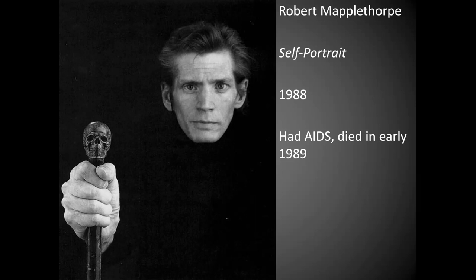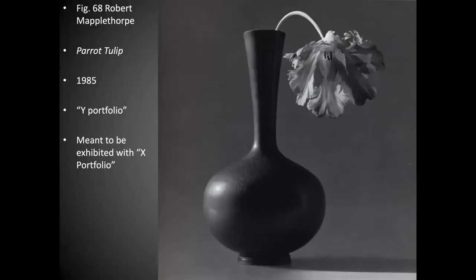He had seen many of his friends go the same way, so he knew he didn't have a chance. In this photograph he wears black so that he looks like a floating skull, almost like the skull he's holding in his hand toward the viewer. One of the things he's most famous for is his Y portfolio and his X portfolio — this was a kind of memento mori, but more specifically called a vanitas.